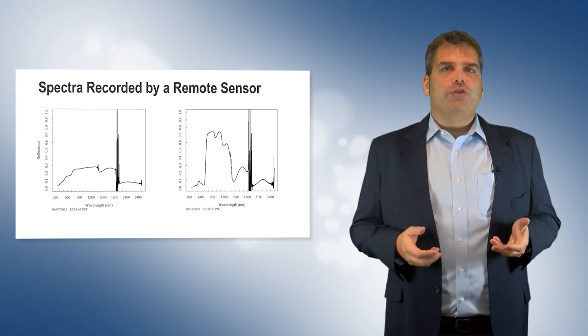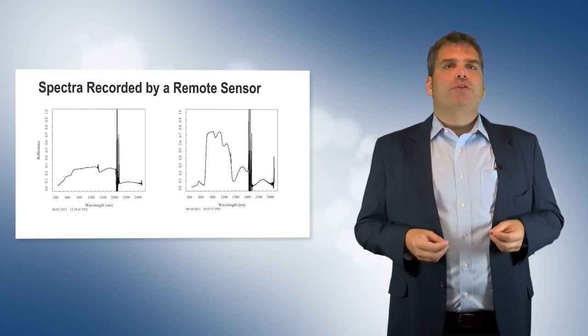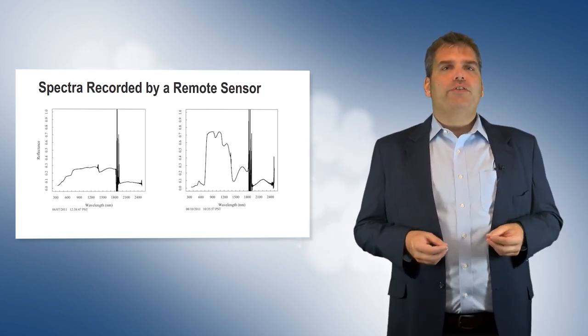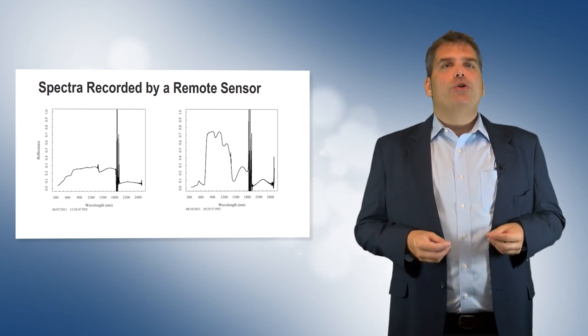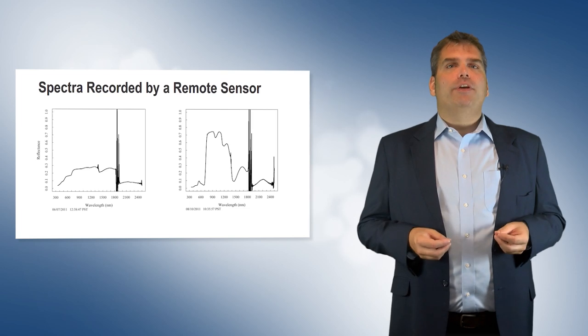The first spectrum was recorded in June and represents the period when the cotton field is dominated by soil spectra because the cotton is just sprouting. As can be seen, light across the spectrum is being mostly reflected. In August, when the field is photosynthesizing and fully productive, there is an obvious peak in the green and NIR and trough in the red.